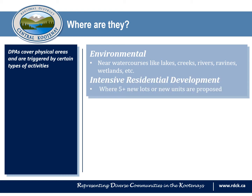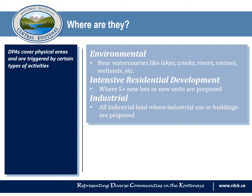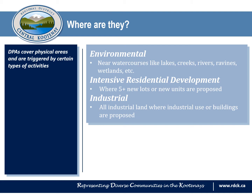Another DPA found in many of the RDCK's bylaws is for intensive residential development where five or more new lots or new units are being proposed. There are also DPAs in place for industrial land uses, where a new industrial use or building is being proposed. DPAs can also be in place for commercial or tourist commercial land, where new commercial uses or buildings or tourist accommodation uses are being proposed.